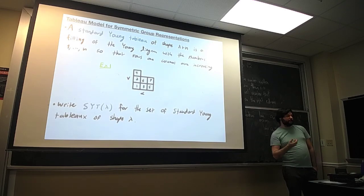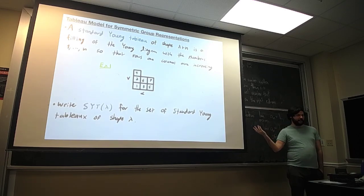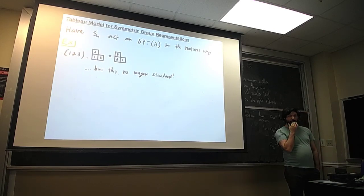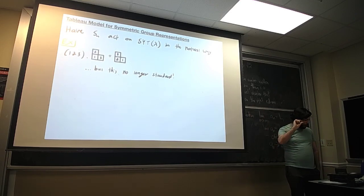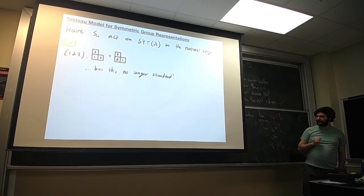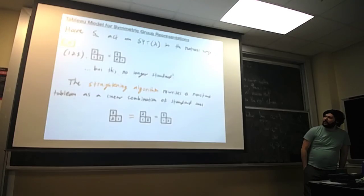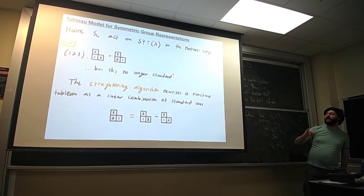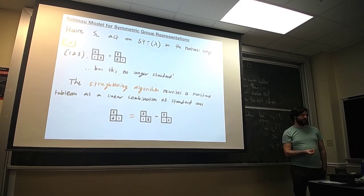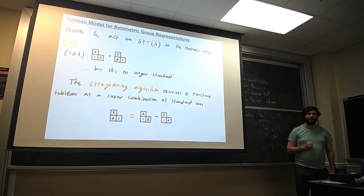Our goal is to make a representation of the symmetric group, so we act in the most natural way on something labeled with numbers 1 to n — we take a permutation and apply it to all of these. But there's a big problem: almost always there's going to be no longer a standard tableau. We'll have some row or column going the wrong way. So what we have to do is apply something called a straightening algorithm to take this non-standard tableau and write it as a linear combination of standard ones. The core idea is that we can act by this permutation, we might mess things up, but we can straighten back out and get a linear combination of standard Young tableaux.